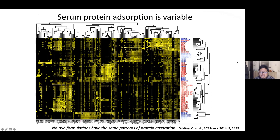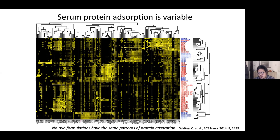We noticed that serum protein adsorption is highly variable. In an experiment conducted in 2012 and published in 2014, we synthesized over 150 different formulations of gold nanoparticles, placed them on a shelf for one month, and used only those that remained well-dispersed—about 70 to 75 formulations. We then incubated these nanoparticles with serum for an hour, purified the gold nanoparticles, digested the gold, and used mass spectrometry to measure the proteins adsorbed onto the surface.